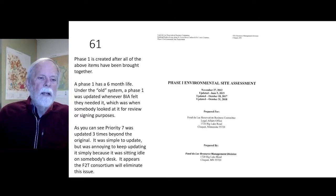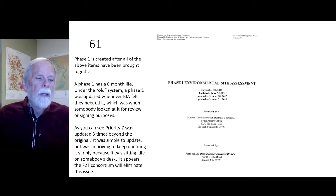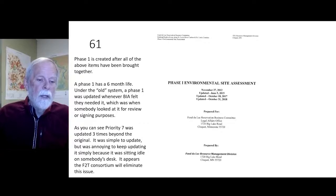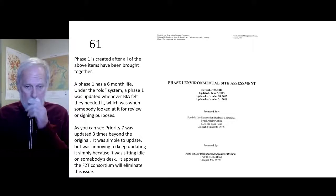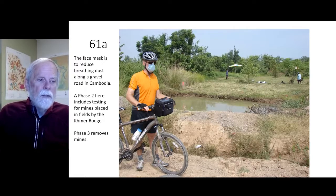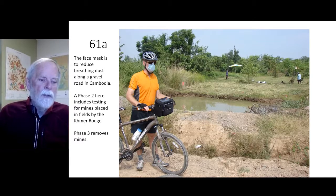A Phase 1 is created after all the above items have been brought together. A Phase 1 has a six-month time life. Under the old system, a Phase 1 was updated whenever BIA felt they needed it — typically when someone looked at it for review or signing purposes. Priority seven was updated three times beyond the original; it is simple to update but annoying to keep updating simply because it was sitting idle on someone's desk. The Fee-to-Trust Consortium appears to eliminate this issue. As a humorous aside: the face mask referenced here is to reduce breathing dust along a gravel road in Cambodia, where a Phase 2 might include testing for mines placed by the Khmer Rouge and a Phase 3 would remove them.